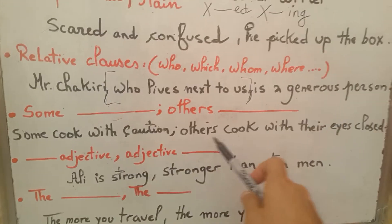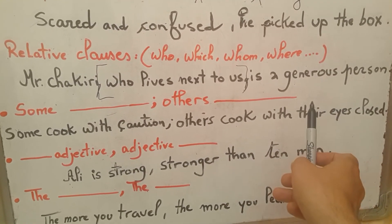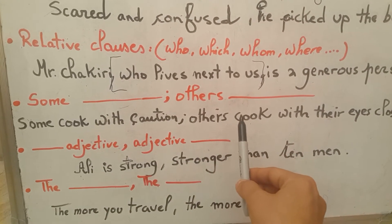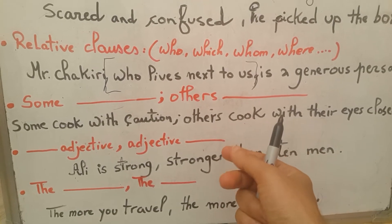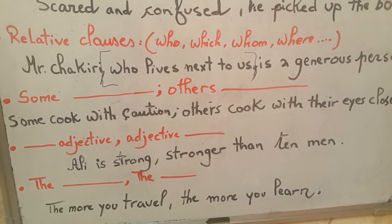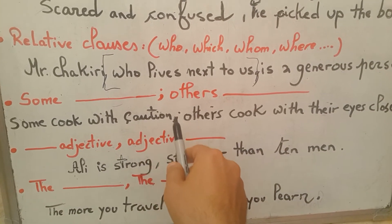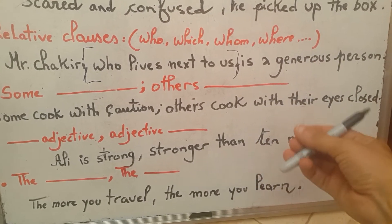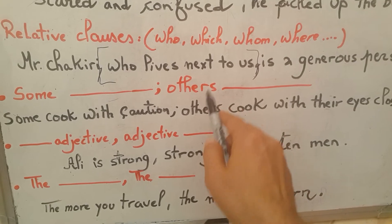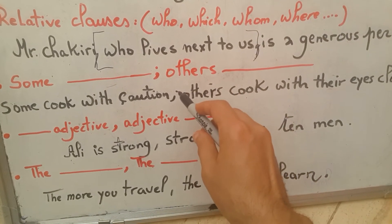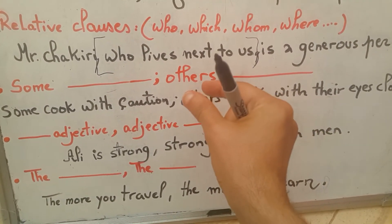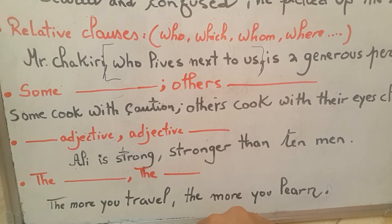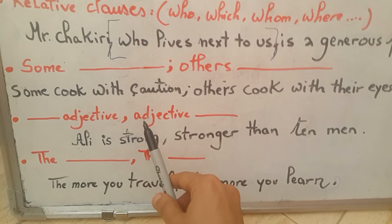Next is the 'some... others' structure. For example: 'Some cook with caution; others cook with their eyes closed.' You can see the repetition of 'some cook, others cook' — it sounds really nice and gives a good contrast. There is also parallelism with the prepositional phrases 'with caution' and 'with their eyes closed', which makes the sentence beautiful. You also need a semicolon here because it shows the connection between these two sentences.